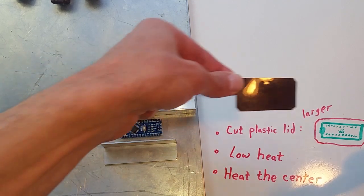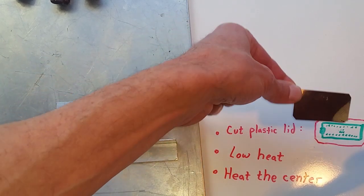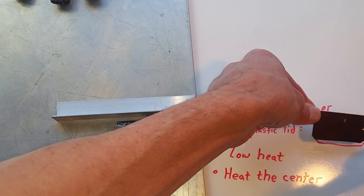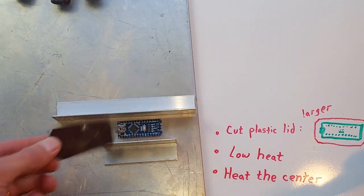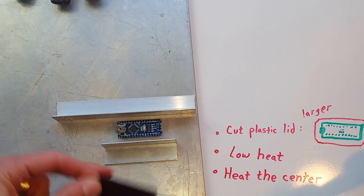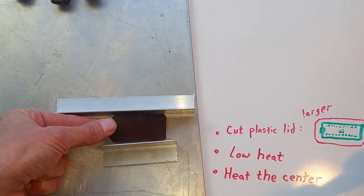Cut the plastic a little larger. That's about the size of the nano board and this is about the size of the lid. Also cut the corners off and make yourself a little jig that holds the plastic in place.